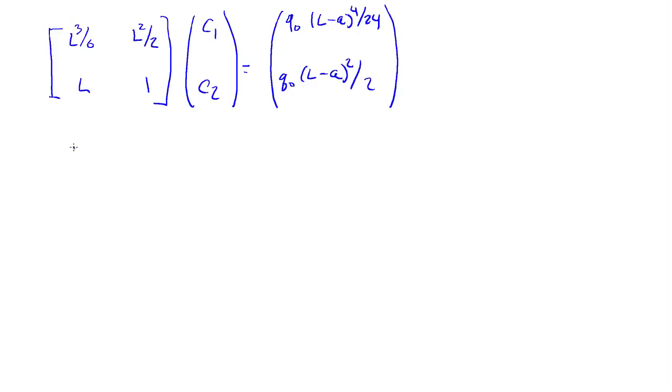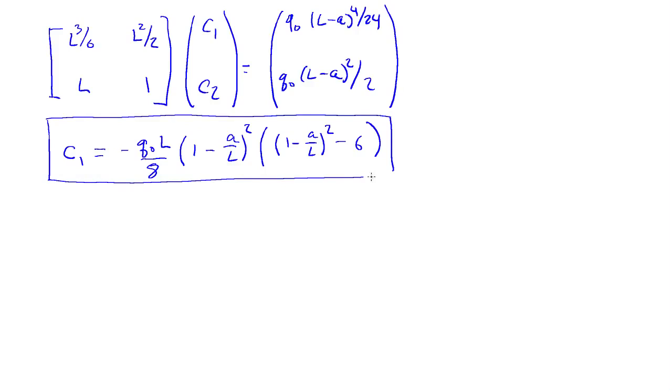And with a little bit of arrangement here, you can show that C1 is minus Q naught L over 8, times 1 minus A over L squared, times 1 minus A over L squared, minus 6. So there's C1. And notice I've factored it in a form so that all the terms of the parentheses are non-dimensional. And then I can see that C1 has units of force, which it needs to have.